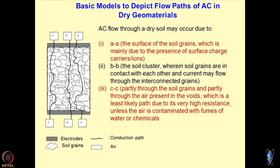Looking at the possibilities of current passing through dry materials, there are three possibilities. In dry soil, the voids have only air. One possibility is grain to air to grain to air. The second possibility is grain to grain, grain to air, grain to grain — and so on. The third would be through the voids only. Deciphering this information from mathematical models is not going to be easy, but we are working on it.